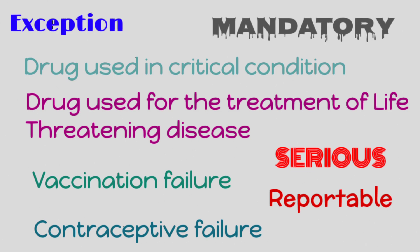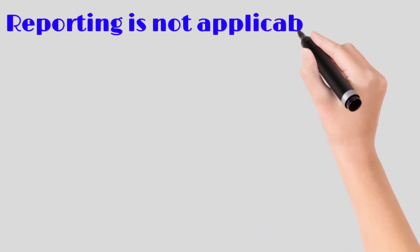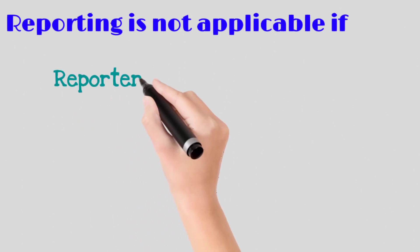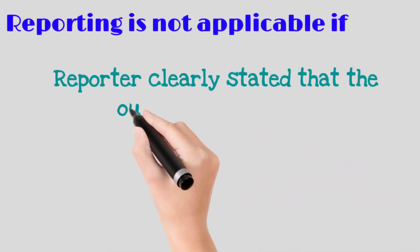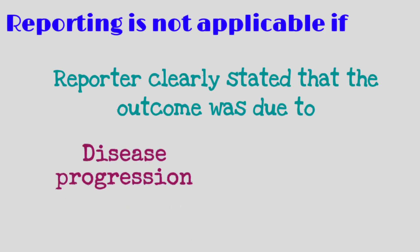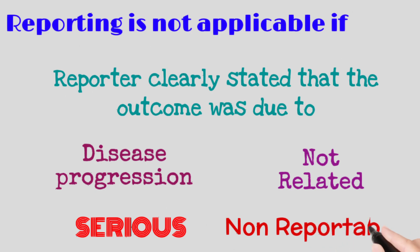We have an exception for this as well. If a report falls under all criteria of a reportable condition as discussed, in a few scenarios these reports are also treated as not reportable to the regulatory authority — if the reporter clearly stated that the outcome was due to disease progression, or if the reporter clearly stated that the event is not related to the drug. In both scenarios, the case is considered as serious but not reportable to the regulatory authority.